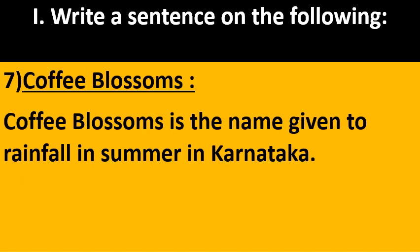Coffee Blossoms is the name given to rainfall in summer in Karnataka. Similarly, you need to concentrate on Kal Baisakhi of West Bengal and Mango Showers of Kerala. These are all names given to pre-monsoon showers.